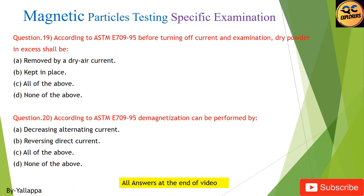Question 19: According to ASTM E709-95, before turning off current and examination, dry powder in excess shall be: (A) removed by a dry air current; (B) kept in place; (C) all of the above; (D) none of the above.